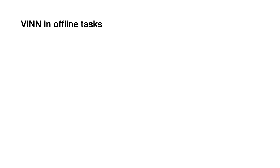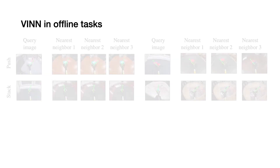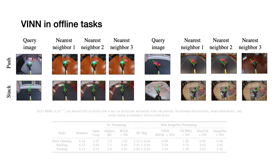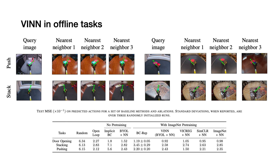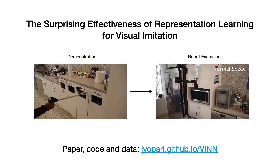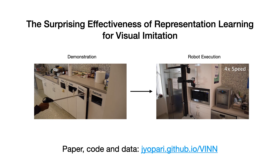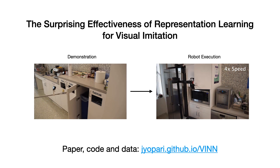We also tried VIN in some offline tasks, namely pushing and stacking. We can see that our visual representation extractor can find semantically similar demonstration frames through a nearest neighbor search. We find that VIN achieves a better MSE loss compared to our baselines on these offline tasks. This is our method, Visual Imitation Through Nearest Neighbors, or VIN, and you can find our paper, open-sourced code, and all of our data at the link shown here. Thank you!